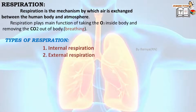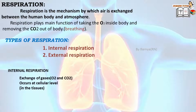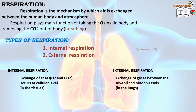Types of respiration: There are two types of respiration — internal respiration and external respiration. Internal respiration happens inside the tissues, where exchange of gases occurs at the cellular level. External respiration happens in the lungs — that is, the exchange of gases between the alveoli and blood vessels.